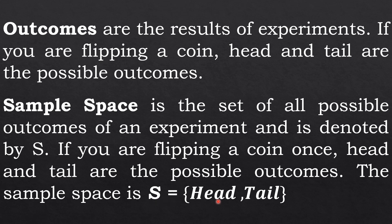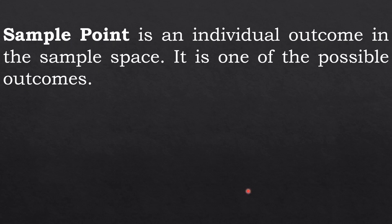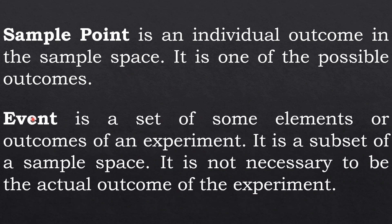The next one we have is sample point. Sample point is an individual outcome in the sample space. It is one of the possible outcomes. The next one we have is event. Event is a set of some elements or outcomes of an experiment. It is a subset of sample space. It is not necessary to be the actual outcome of the experiment.